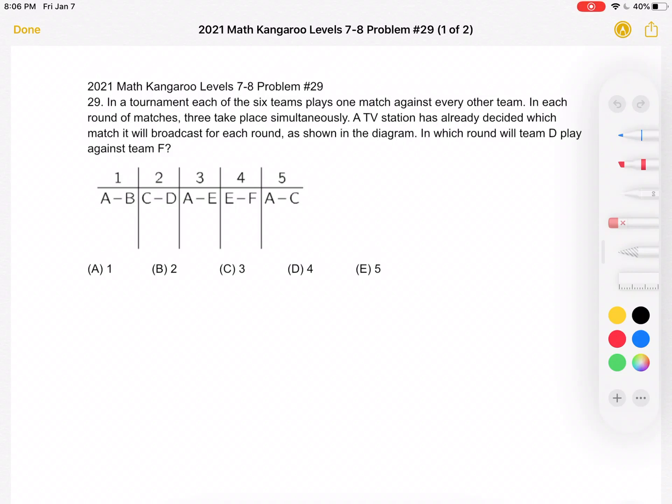This is the 2021 Math Kangaroo Level 7-8, problem number 29. In a tournament, each of the six teams plays one match against every other team. In each round of matches, three take place simultaneously. A TV station has already decided which match it will broadcast for each round, as shown in the diagram.